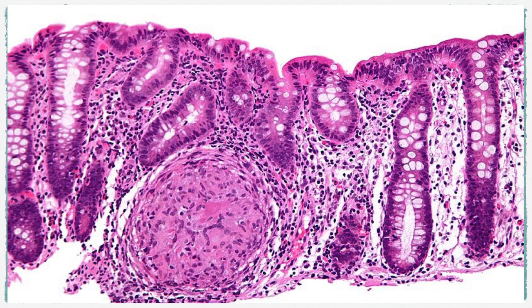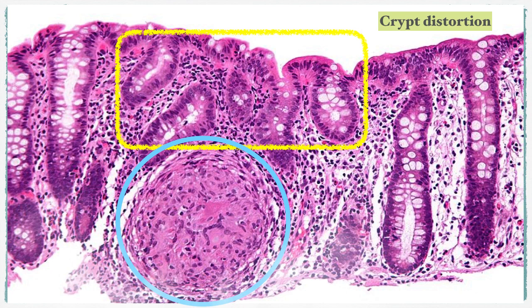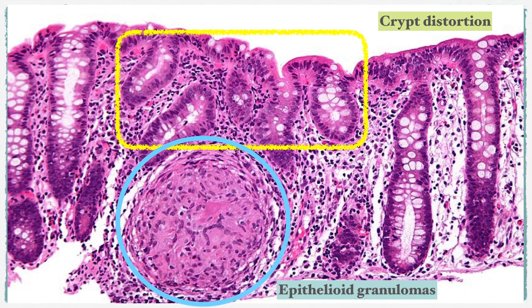From this section, look at the crypts first. The arrangement is haphazard with irregular and distorted crypts. This crypt distortion is a feature of chronic inflammatory bowel disease for both Crohn's disease and ulcerative colitis. But there is another feature present here — an epithelioid granuloma, which is a collection of epithelioid cells that can be seen at any layer. It is different from a TB granuloma because it is non-caseating. Presence of granuloma is a diagnostic hallmark for Crohn's disease; however, absence of it does not exclude Crohn's disease.